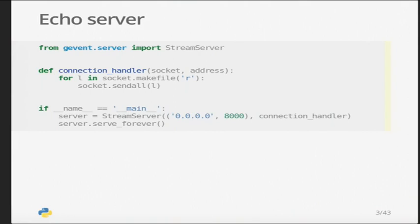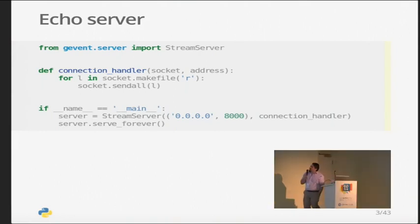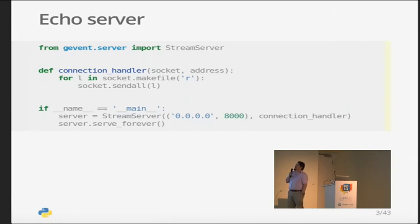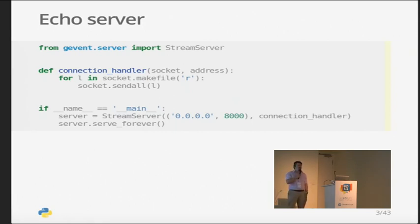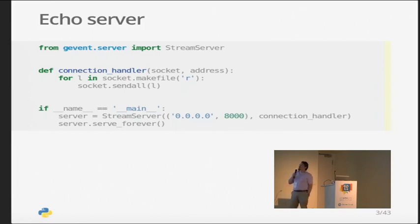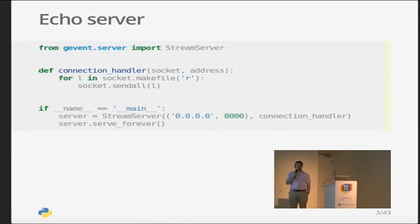The only GeoVent component we're using here is the stream server. We pass in a connection handler, and for any connection received on that port the connection handler is called. makefile is a feature of socket — we're just echoing back lines, so makefile turns it into a file-like object you can iterate for lines and send them back over the same socket. This is very similar to code you might write with plain Python before 3.3, except some magic happens so that it is highly scalable. We'll talk about the magic later.